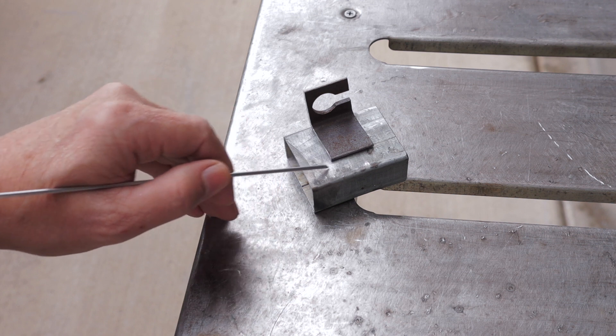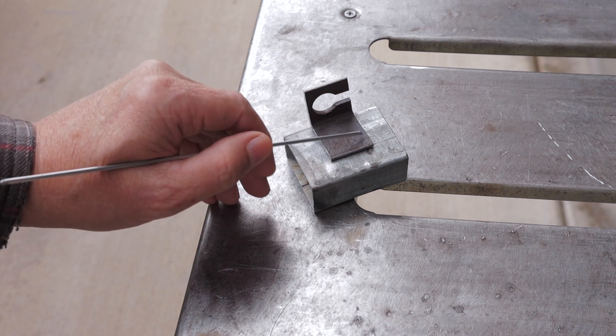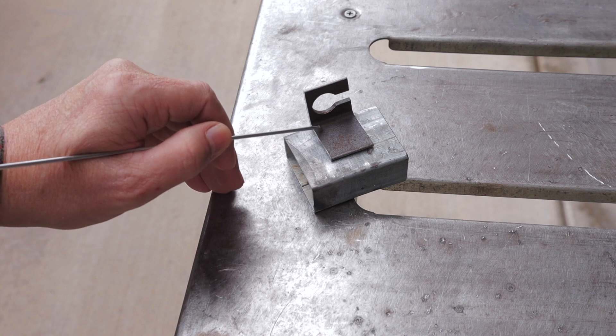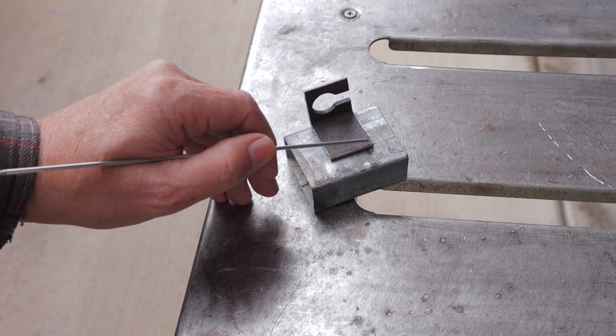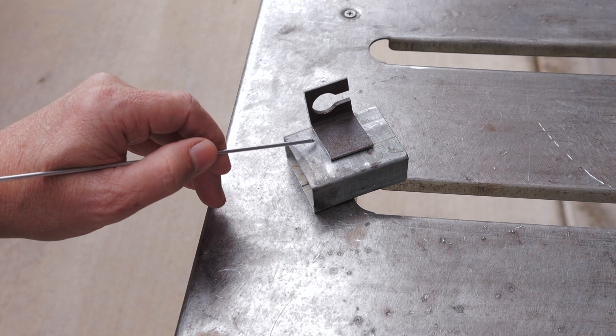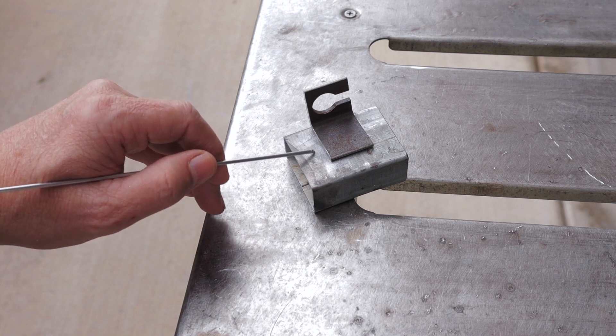And we'll see what type of a weld we can get using a flux core welder on 110 volts. See if we can do that without burning through this thin rectangular tubing.